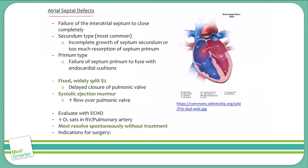An atrial septal defect is an example of an acyanotic heart condition. It's a left to right shunt from the left atrium to the right atrium. Blood naturally flows in this direction because there's increased pressure in the left atrium compared to the right atrium, flowing down that pressure gradient. This is due to a failure of the interatrial septum to close.